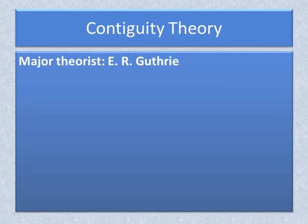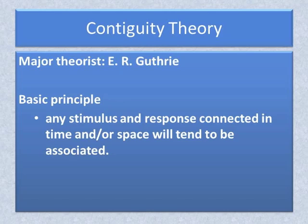The last behavioral theory to be considered is contiguity theory. The major theorist in the development of this approach to learning is E.R. Guthrie, who lived between 1886 and 1959. The basic principle of contiguity theory is that any stimulus and response that occur together in time and/or space will tend to be associated by the learner.